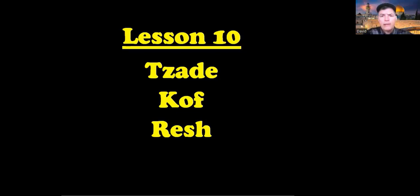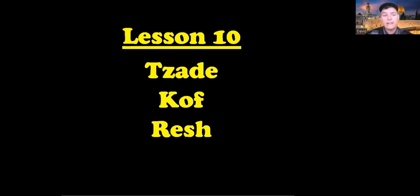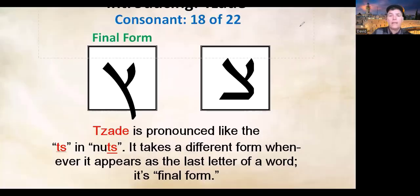Take a moment right now, if you haven't already done so, to click on the link and get your downloadable student document, which will be tracing tablature pages. While I am giving this lesson, you'll be able to pause at the appropriate places and do some of the tracing of these new consonants and follow along with me as I make my way through lesson number 10. Consonant number 18 of 22 is pronounced tsade.